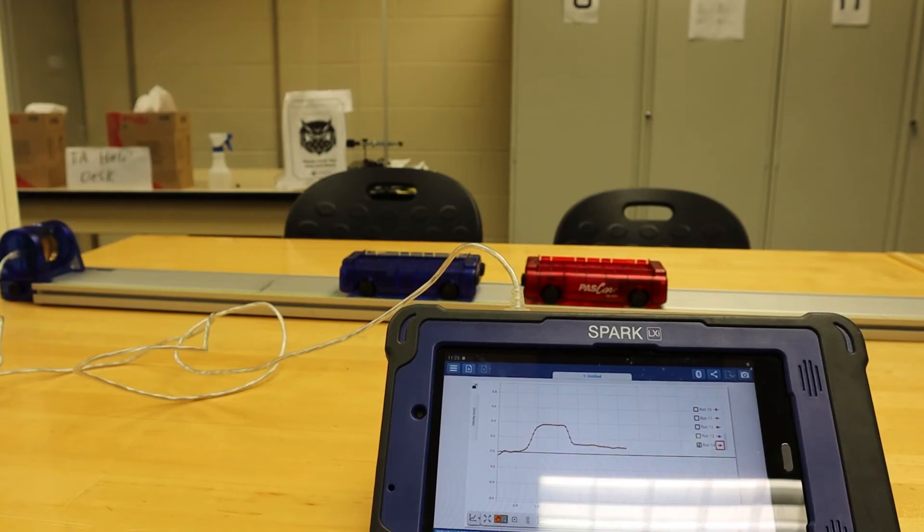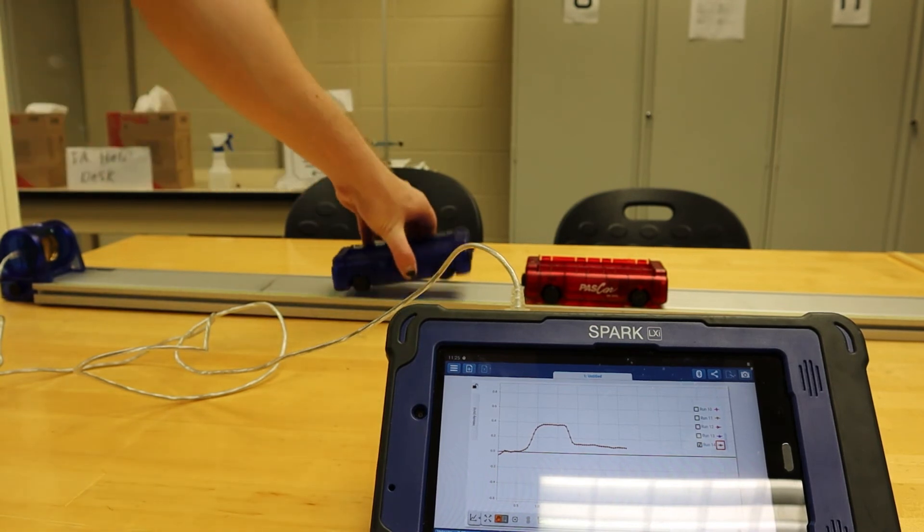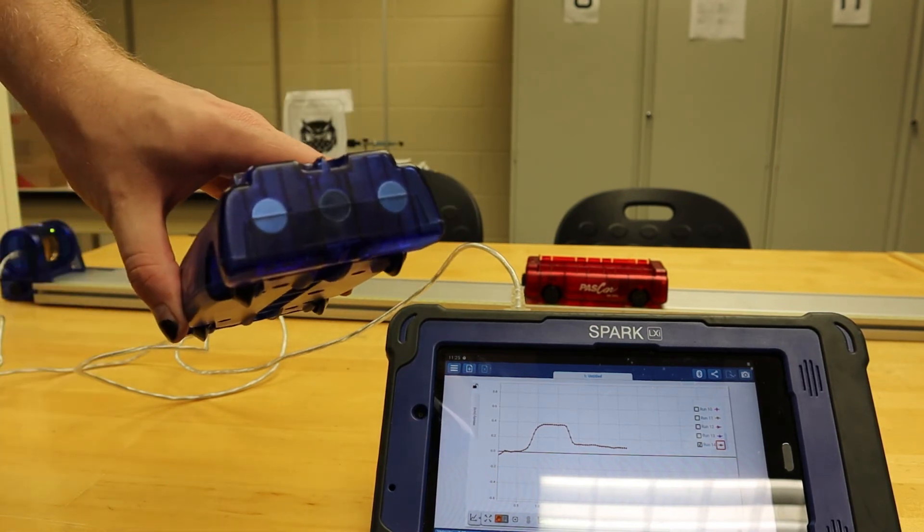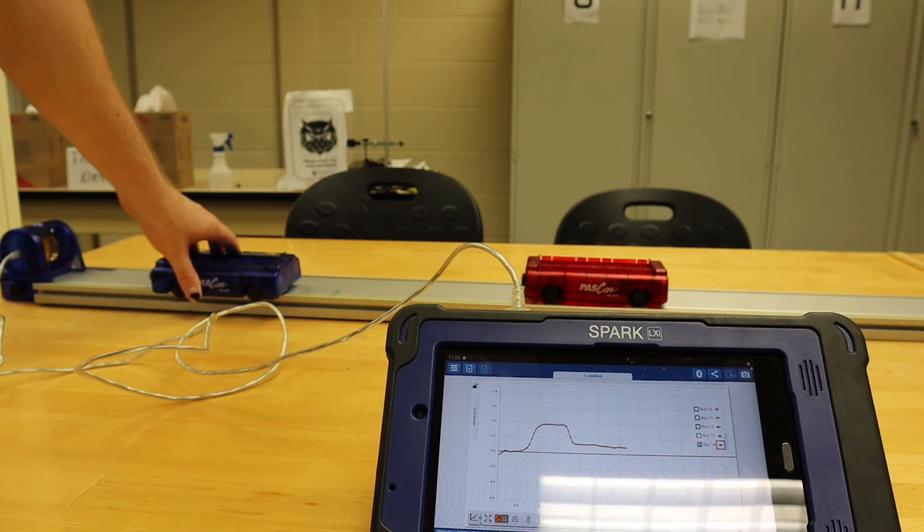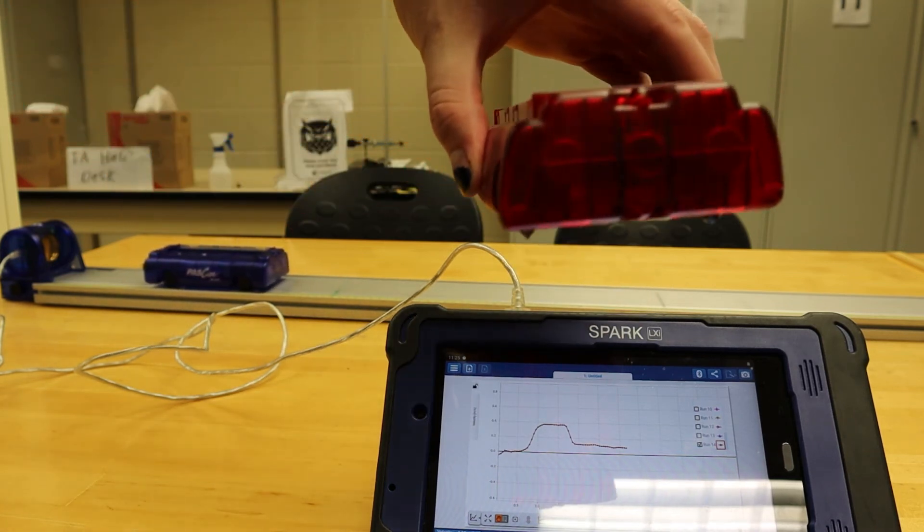Now we are ready to move on to Procedure C, which involves elastic collisions. To set up for this procedure, we will rotate both of the passcars 180 degrees so now the magnet sides are facing each other.